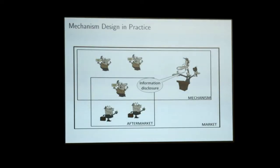Whatever the aftermarket is, an assumption for this analysis is that the designer cannot just design the aftermarket and she cannot contract directly with the third parties. However, she can do one thing: she can disclose information that was elicited in the mechanism from the agents in order to influence the aftermarket indirectly by changing the information structure.